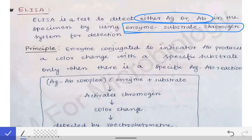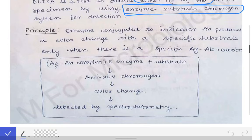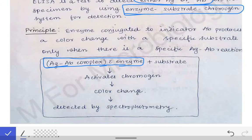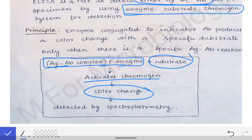So these are the two steps: first, there is always formation of an antigen-antibody complex in the well of the ELISA, and second, there is a change in color after the addition of the substrate. When we add the substrate, activation of the chromogen leads to a color change detected by spectrophotometry, helping us detect the antigen or antibody in the patient's serum.